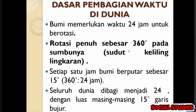Dari situ kita memperoleh pengetahuan bahwa di seluruh dunia itu dibagi menjadi 24 zona waktu, dengan luas masing-masing 15 derajat garis bujur. Jadi setiap 15 derajat garis bujur, bumi berputar 1 jam. Berarti perbedaan waktu di dunia itu ada 24 jam. Dari sini sudah paham konsep pembagian waktu — dasar pembagian waktu di dunia berarti ada 24 jam, waktu di dunia ini ada 24 jam yang berbeda-beda.